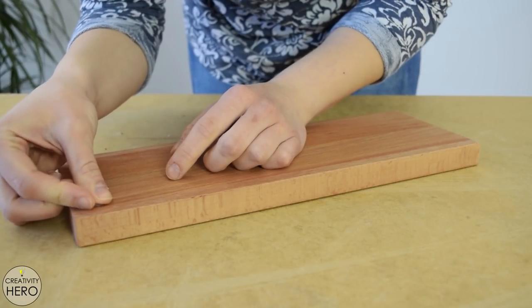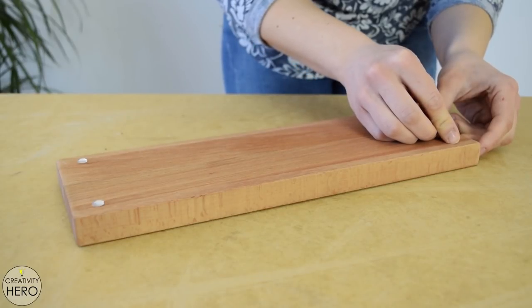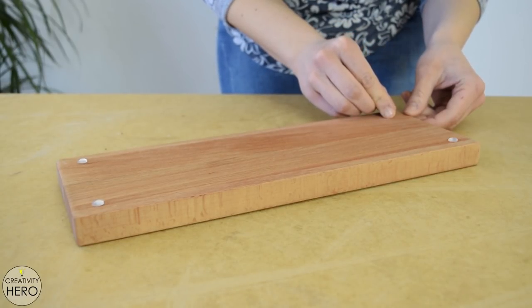Once the base has dried I can add self-adhesive cabinet bumpers on the bottom in order to protect the surface where it will be placed on.